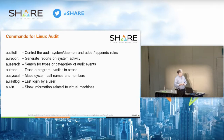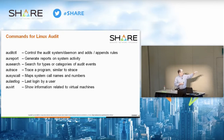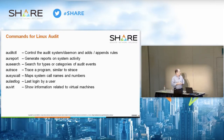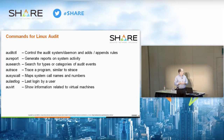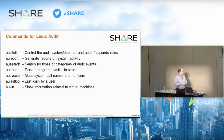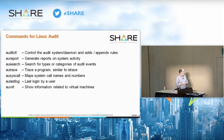The most common commands are: auditctl to append rules or control the daemon; aureport to generate a report based off log files; ausearch to search through records — for example by the labels you put on rules; autrace, similar to strace; aulastlog to show the last login by a user (basically the same as the Linux 'last' command); and auvert so you can get information about virtual machines — if you're running KVM, there'll be audit records about the virtual machines on your system.